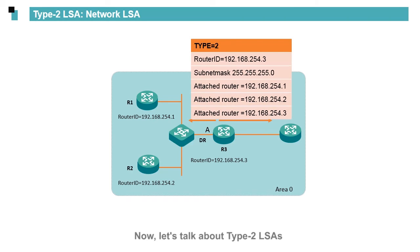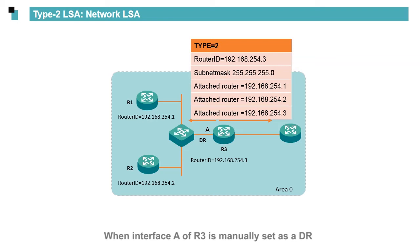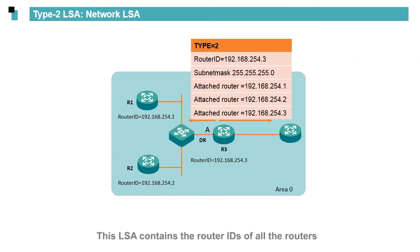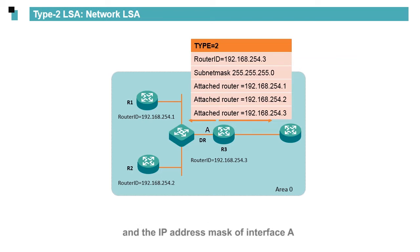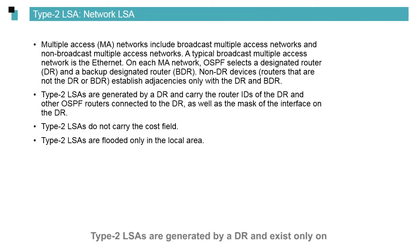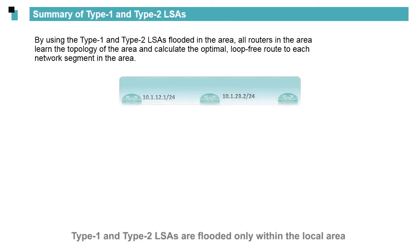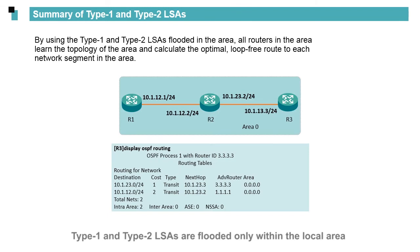Let's talk about Type 2 LSAs. In the topology shown on this slide, OSPF neighbor relationships are established among routers R1, R2, and R3 through a switch. When interface A of R3 is manually set as a DR, R3 floods a Type 2 LSA in Area 0. This LSA contains the router IDs of all the routers and the IP address mask of interface A. Type 2 LSAs are generated by a DR and exist only on the network where a DR exists. Type 2 LSAs do not carry the cost field.